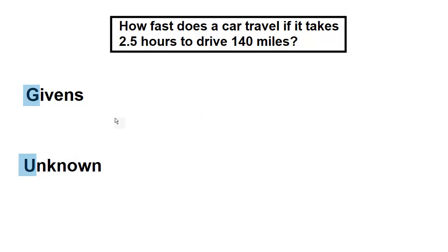Let's focus on G and U first — the Givens and Unknown. These are not difficult to remember because it's basically what is in the problem. Just look at the problem and see what it gave you and what it's asking. When reading a problem, start seeing with your eyes — as if you had a highlighter — any numbers with their units. Here I see 2.5 hours and 140 miles; those are both givens.